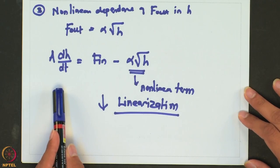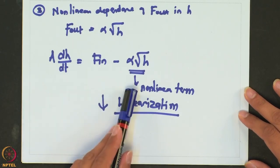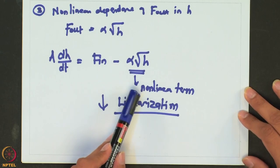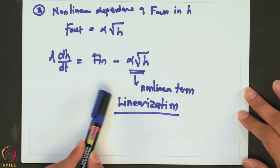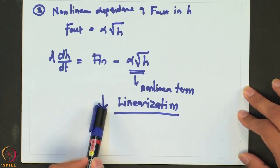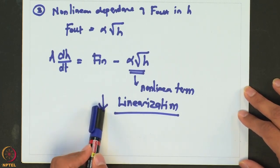Welcome back. Before the break, we were working on a liquid surge tank where we were considering a valve at the outlet, and the case when the flow through that valve is proportional to the square root of the height. The equation we got for this system is A dh/dt = F_in − α√h, and we noted that the √h term is non-linear. We cannot proceed further with Laplace transform because the system is non-linear.